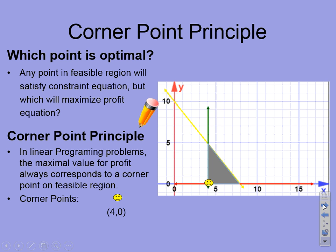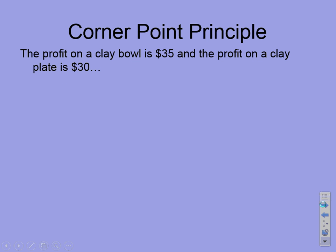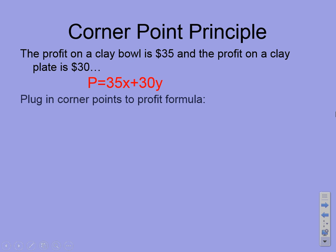There are three corner points in this feasible region. The point (4, 0) is a corner point. The point (8, 0) is a corner point — that's where two of the lines intersect. And (4, 5) is a corner point. So these are all the corner points, and one of them will maximize the profit. We take our profit equation P = 35X + 30Y and plug in those corner points to find out which one gives the maximum profit.